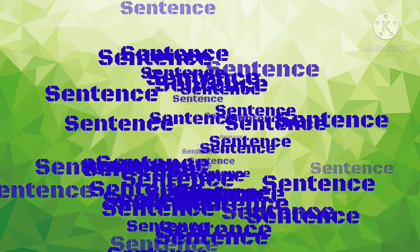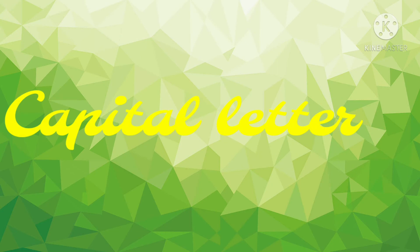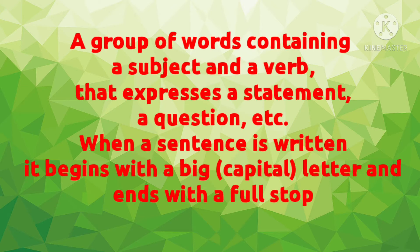But a sentence has certain rules. The sentence always starts with a capital letter. It should have a noun or a pronoun. So children, what is a noun? Noun is the name of a person, place, animal or thing. And pronouns are the words which are used in place of a noun, like he, she, it, they, and many more.